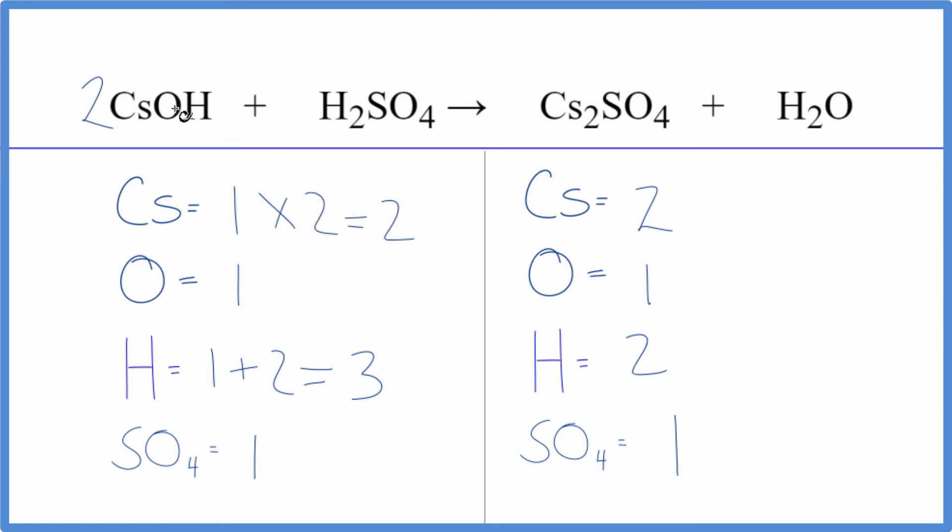Then we have one times two for the oxygen. We have two of those. Let's update the hydrogens. Two times the one, that's two plus these two right here in the sulfuric acid. Four.